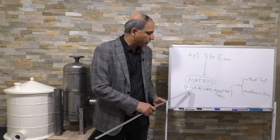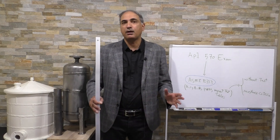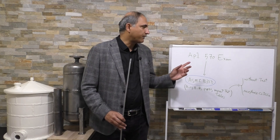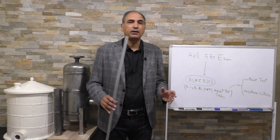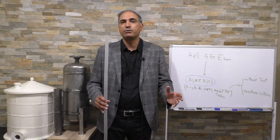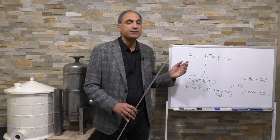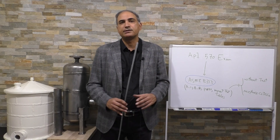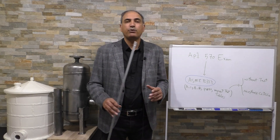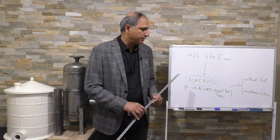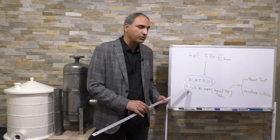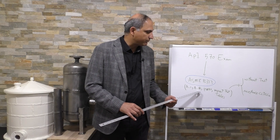If you learn those four items, it's going to be enough for your API 570 exam. To calculate the minimum required thickness, you need to know the allowable stress and joint efficiency. The formula you'll use is from API 574 — it's similar to the ASME B31.3 formula but a bit shorter. You plug in the numbers to calculate minimum required thickness, using the A1 table for allowable stress and the A1B table for joint efficiency.